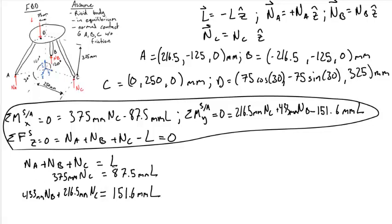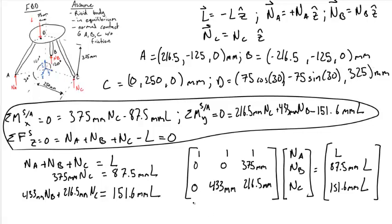The above set of linear equations can be written as this following set of linear equations by solving for L or moving L to the right-hand side. When solving a set of linear equations, it's convenient to use linear algebra to help us solve the problem.